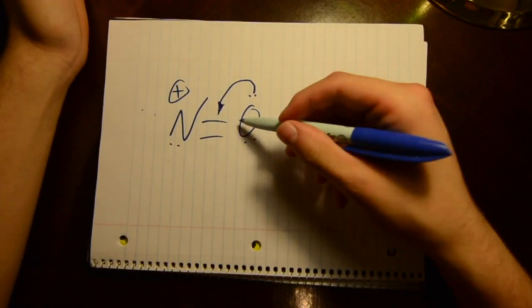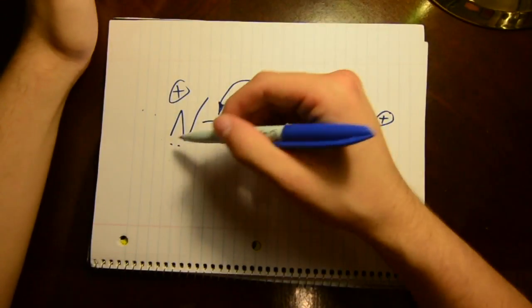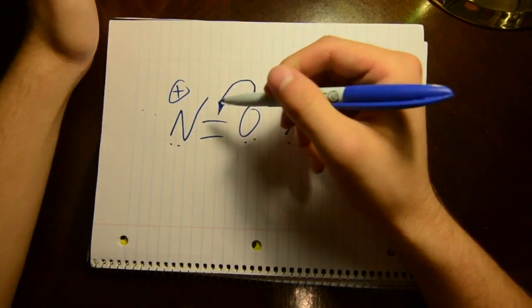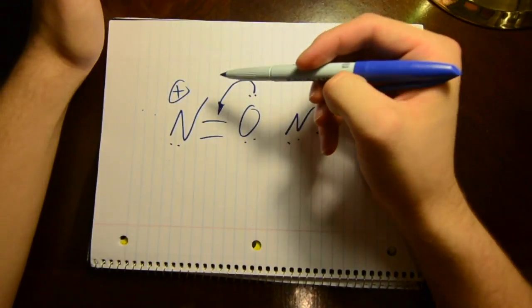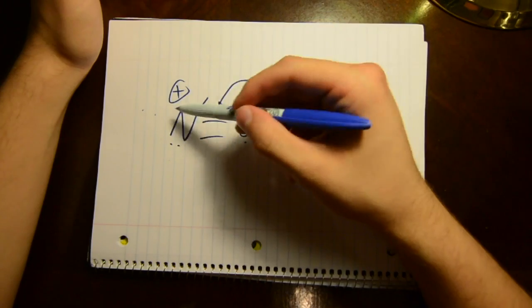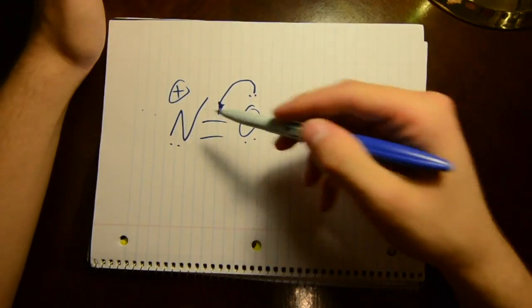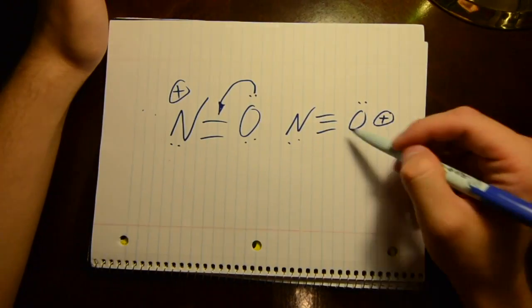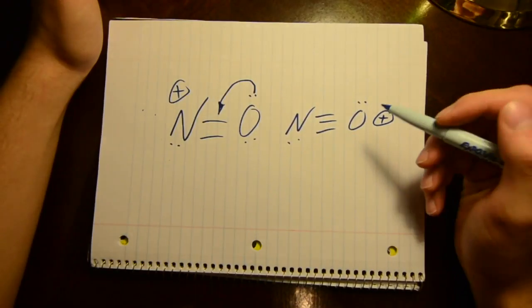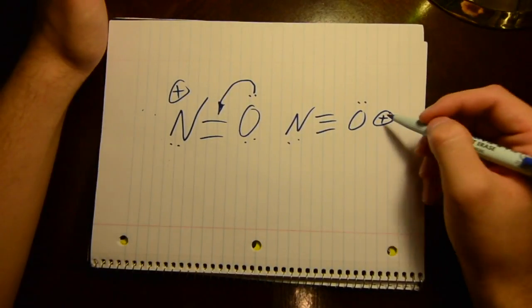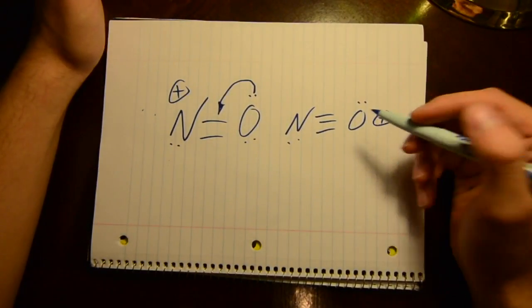So why is this favored over that? It's because the nitrogen doesn't have a full octet and a full octet is more important than electronegativity rules. So here you have two atoms that have full octets and then you have a positive sign on the oxygen.